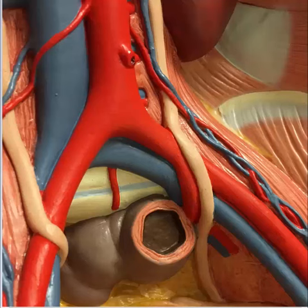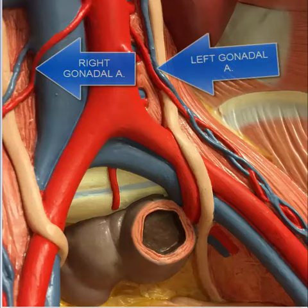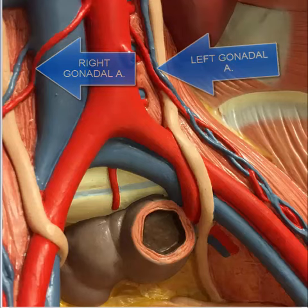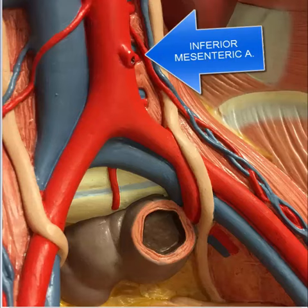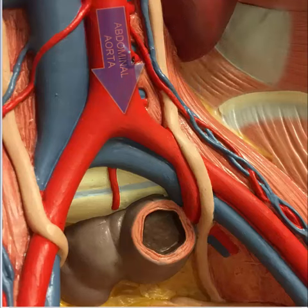Let's say a few words about the blood supply to the pelvis. We see here the left and right gonadal artery, the inferior mesenteric artery, and the abdominal aorta.